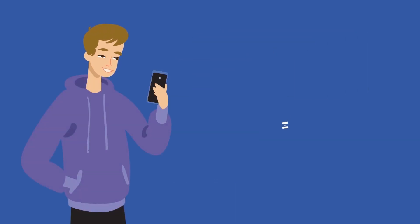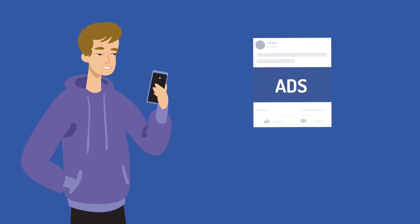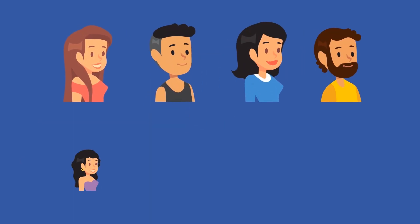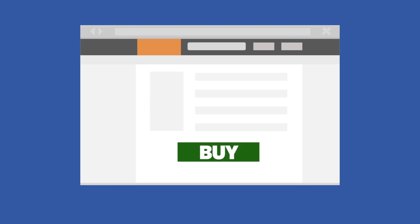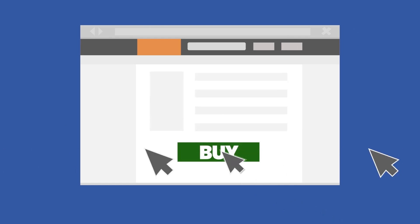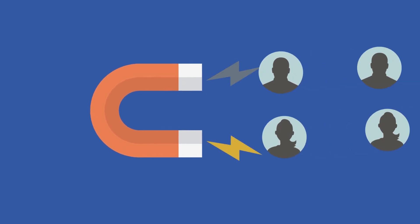You can use the Pixel to make sure your ads are shown to the right people, find new customers, or people who have visited a specific page or taken the desired action on your website. Drive more sales, and set up automatic bidding to reach people who are more likely to take an action that you care about, like making a purchase.